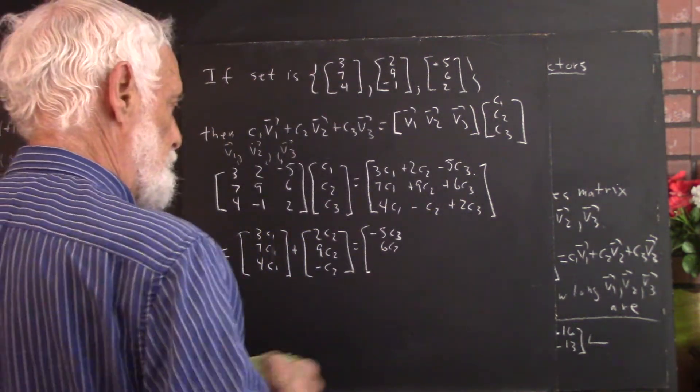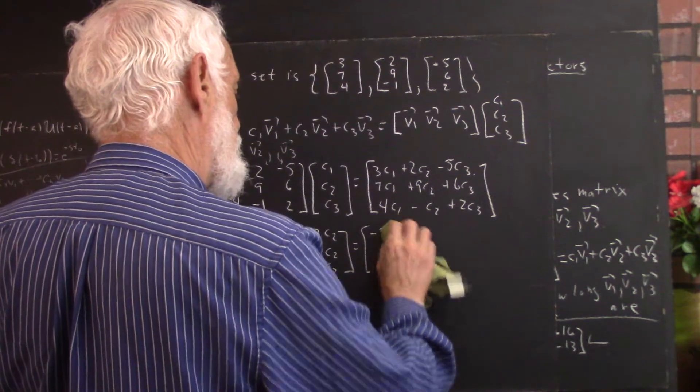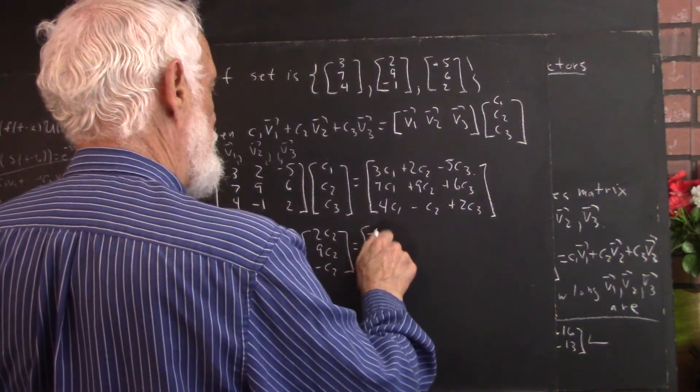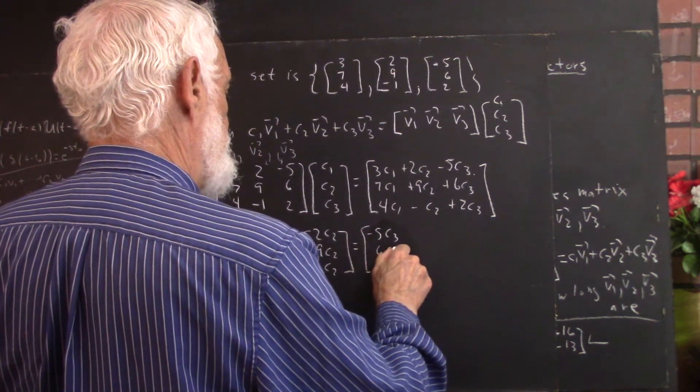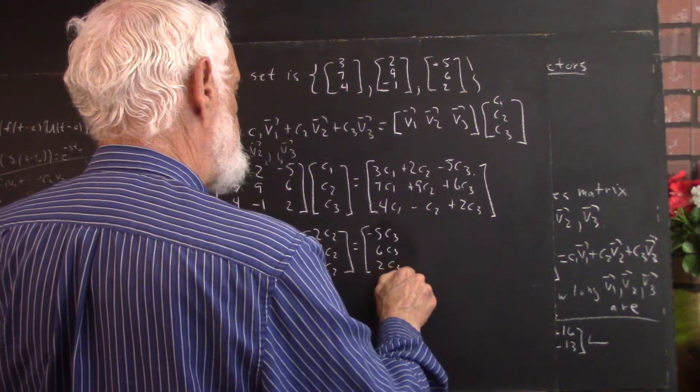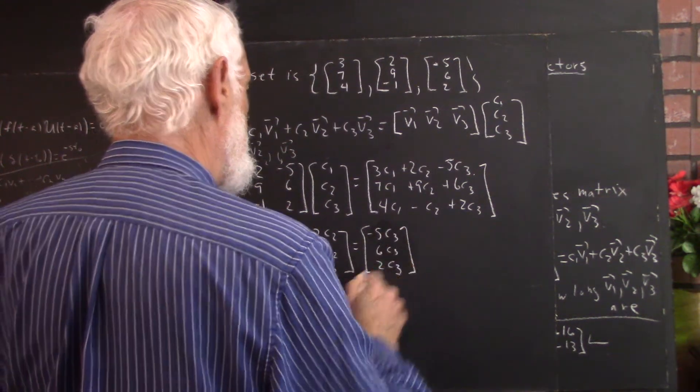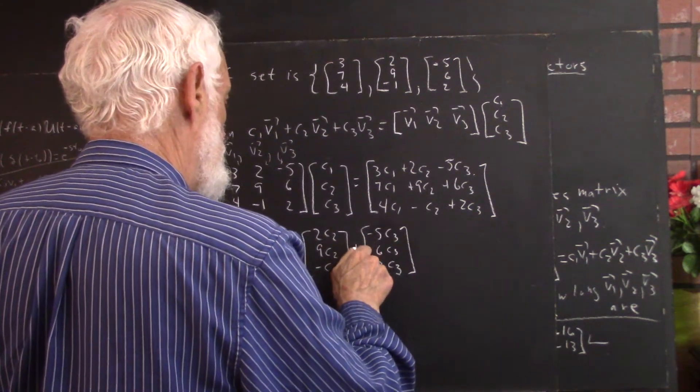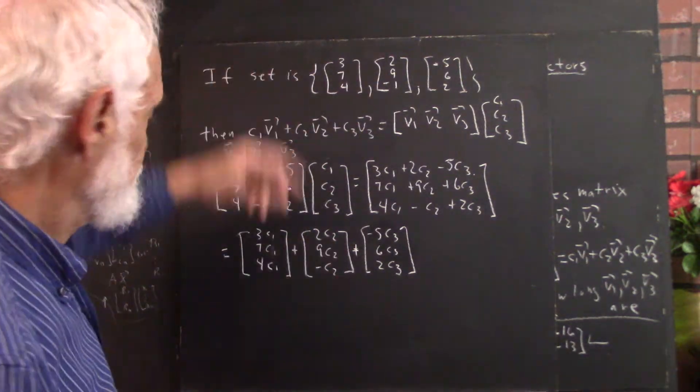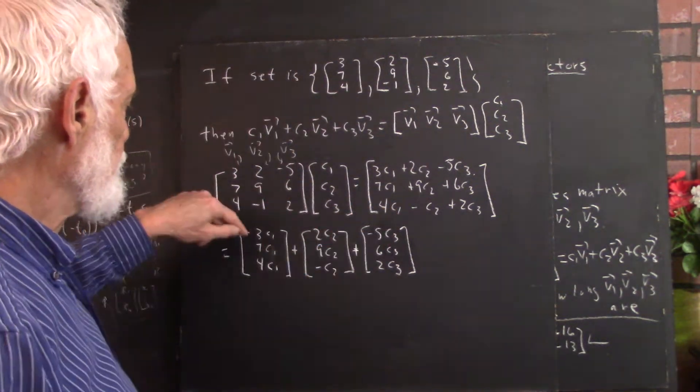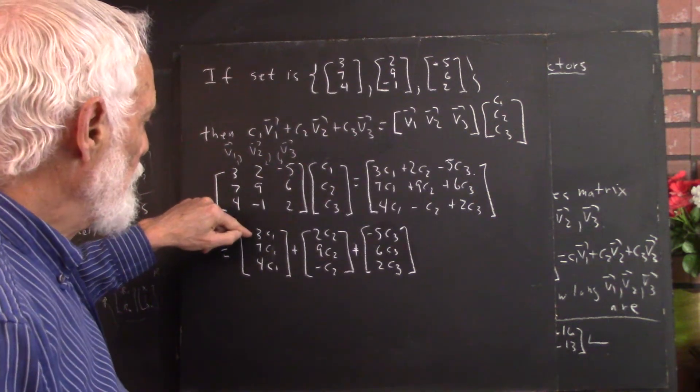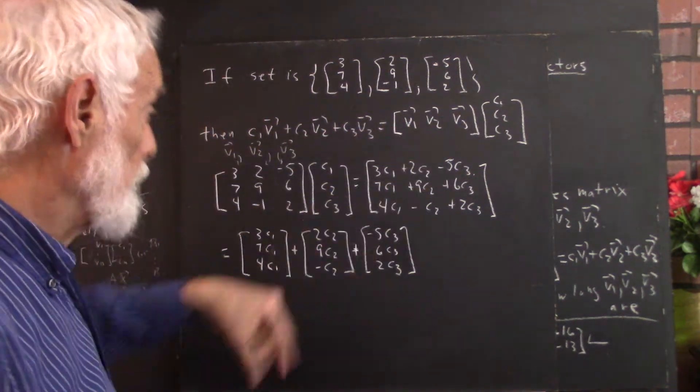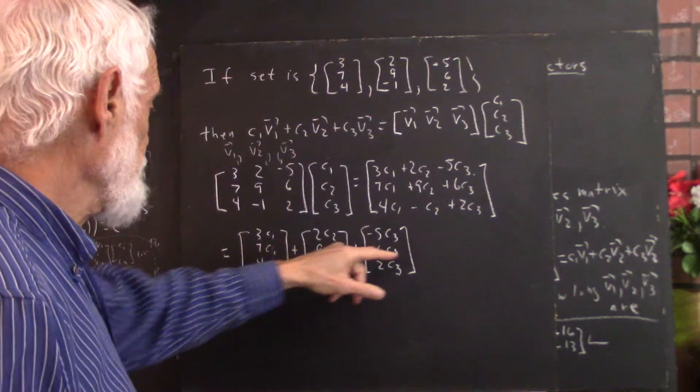Let's make that legible. Okay, negative 5c3, 6c3, 2c3, and that's plus, not equals. Okay, so clearly this, plus this, plus this, numbers in the first row, 3c1, 2c2, negative 5c3 match the calculation in the first row, and similarly with the second and third rows.